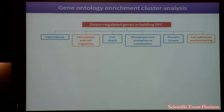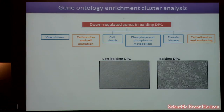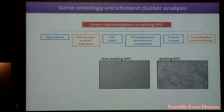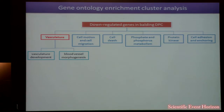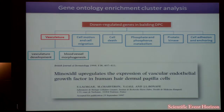The categories of cell motion and cell migration, and cell adhesion and anchoring were not surprising, because from the morphology of balding versus non-balding DPCs, we could already see that the balding cell line tends to grow in a monolayer fashion and doesn't migrate or spread well across the culture surface, pointing to an inherent lack of ability to migrate and adhere. However, we were most interested in the vasculature cluster, broken down into vasculature development and blood vessel morphogenesis, pointing to the hypothesis that balding DPCs have a reduced ability to foster vascularisation — in agreement with the postulated mechanism of minoxidil, thought to alleviate AGA symptoms through fostering vascularisation.